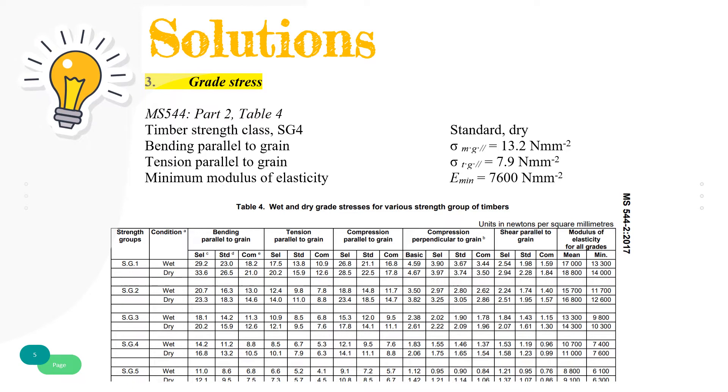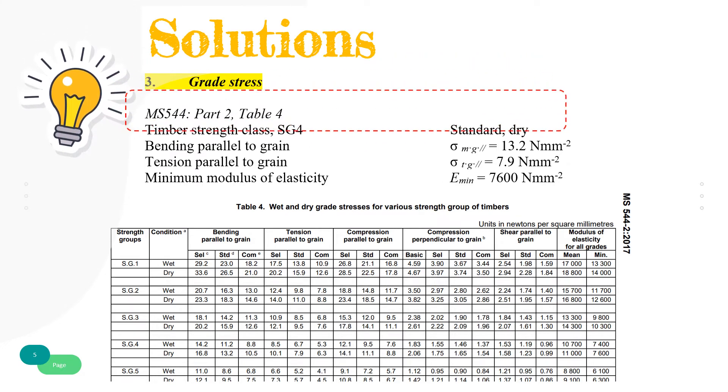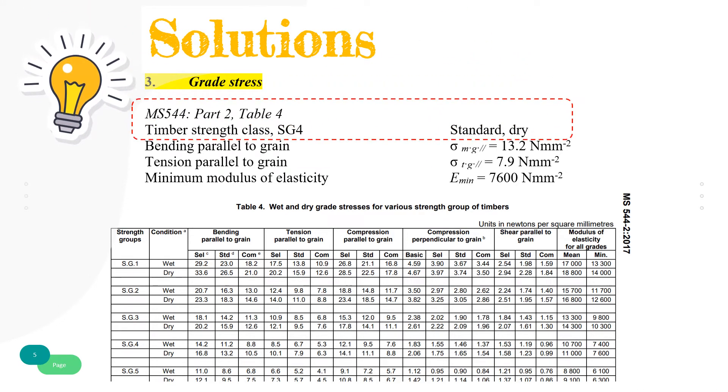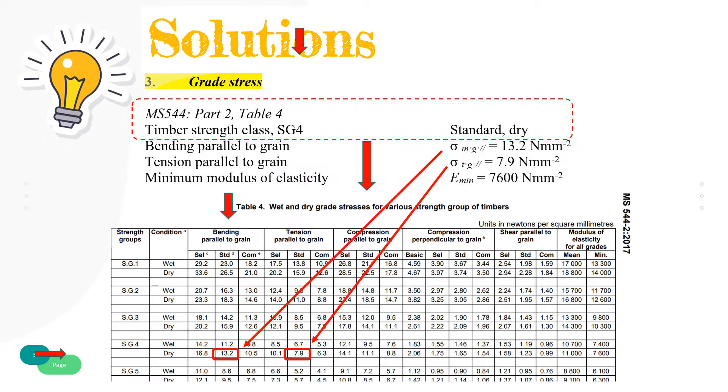Step number 3. Since a truss rafter tie is assumed to be a timber in strength class SG4, standard and dry, grade stress for SG4 species, standard grade stresses parallel to grain is referred to Malaysian standard table 4, which shows dry grade stresses of timber for moisture content less than 19%. The value of bending parallel to grain is 13.2 N per mm square, tension parallel to grain is 7.9 N per mm square, and minimum modulus of elasticity is 7600 N per mm square. These values will be used in step number 6 and step number 7.